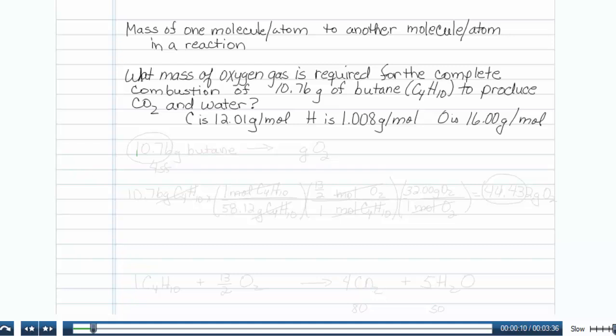The question says, what mass of oxygen gas is required for the complete combustion of 10.76 grams of butane to produce CO2 and water? The molar masses of each of the atom types are listed below.